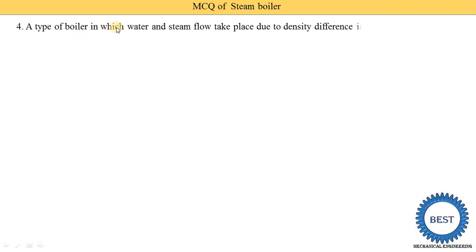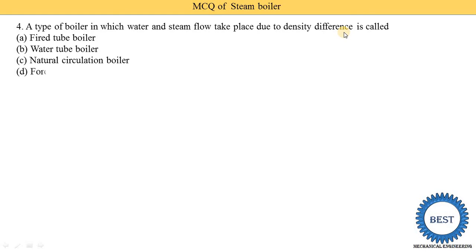A type of boiler in which water and steam flow takes place due to density difference is called: fire tube boiler, water tube boiler, natural circulation boiler, or forced circulation boiler. Here, no pump is used — water and steam flow due to density difference, i.e., gravity. That is called natural circulation.